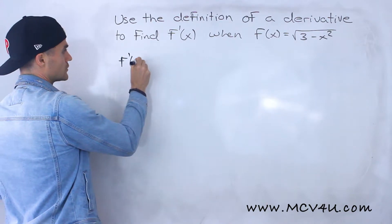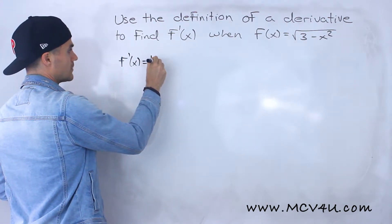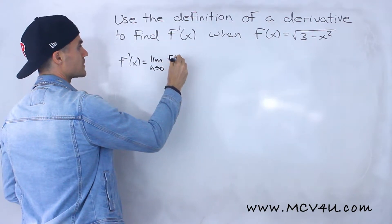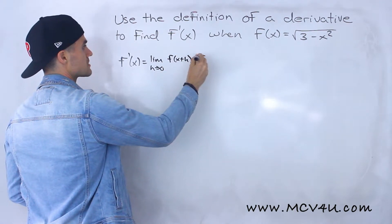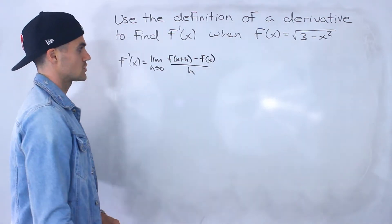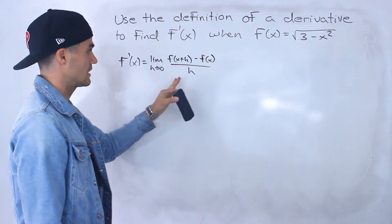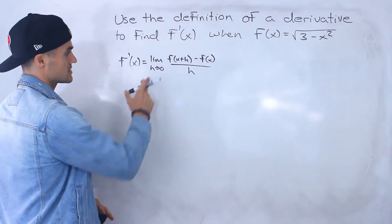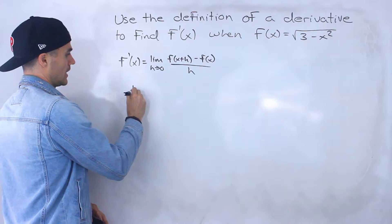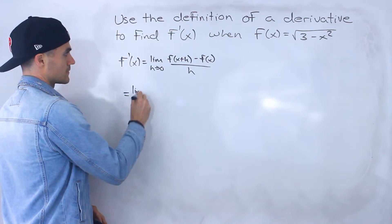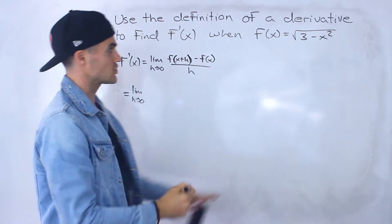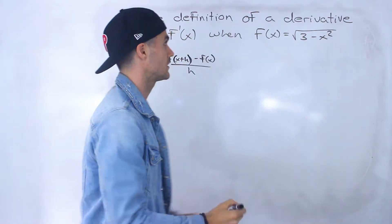The definition of a derivative is the limit as h approaches zero of f of x plus h minus f of x all over h. Remember we're trying to get rid of this h in the denominator so we could plug in zero for h. So what we would do is plug x plus h in for the x value.